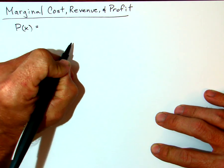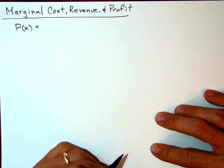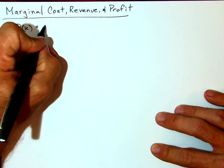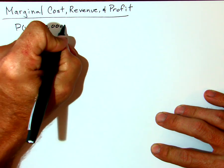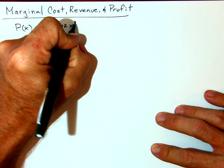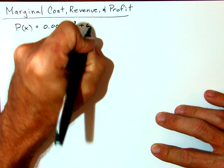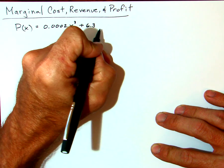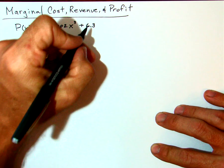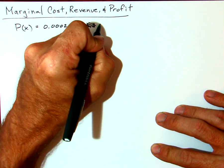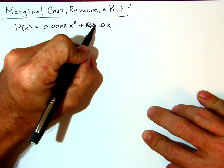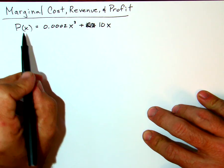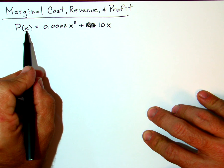x is the number of bicycles that they sell. So we would have this function: 0.0002x³ + 10x.